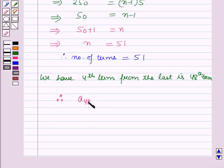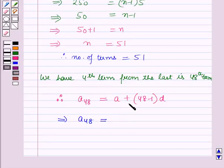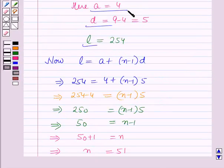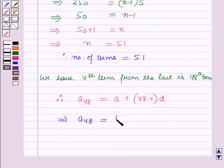Therefore, the 48th term, A₄₈, is equal to A plus (48 minus 1) times D. We will put the value of A and D which is 4 and 5 respectively. So this will be 4 plus 47 times 5, which is further equal to 4 plus 235, which equals 239.